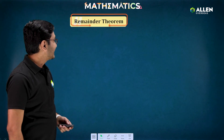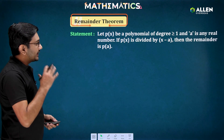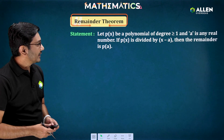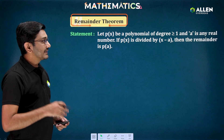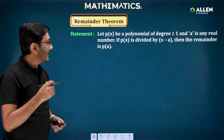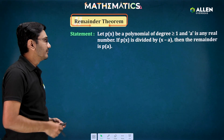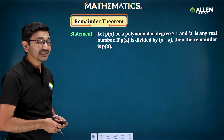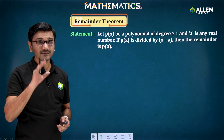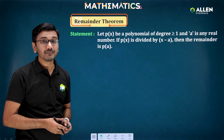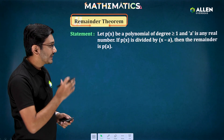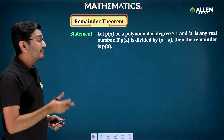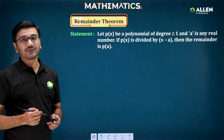What exactly is the remainder theorem? If p(x) is a polynomial of degree greater than 1 and a is any real number, if p(x) is divided by (x minus a), then the remainder will be p(a).